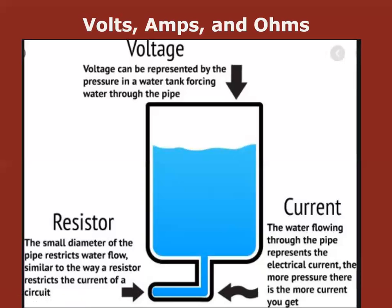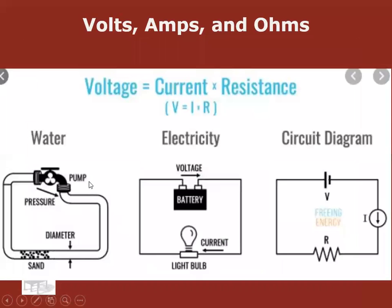Here's another analogy. Take a big gulp of water and blow it out through a straw. The pressure your mouth creates is the voltage. The current is the water you blow out. The resistor is the small straw — it's much easier to spit the water straight out of your mouth, but the straw creates resistance.